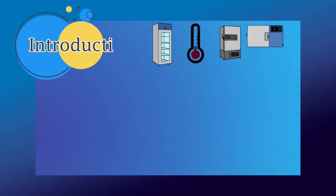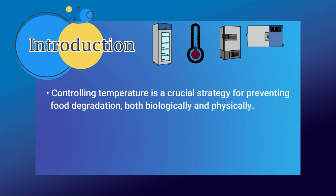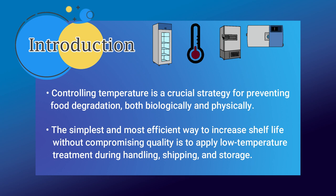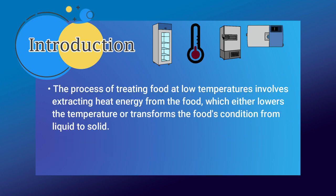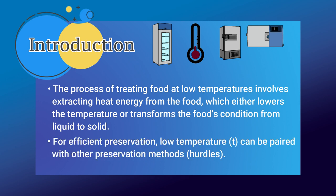Let's have a brief overview of why we do Low Temperature Treatment as a Method of Food Preservation. Controlling temperature is a crucial strategy for preventing food degradation both biologically and physically. The simplest and most efficient way to increase shelf life without compromising quality is to apply low temperature treatment during handling, shipping, and storage. The process involves extracting heat energy from the food, which either lowers the temperature or transfers the food's condition from liquid to solid. For efficient preservation, low temperature can be paired with other preservation methods, known as hurdles.